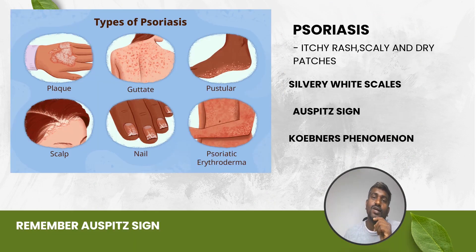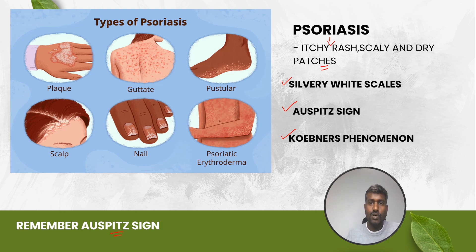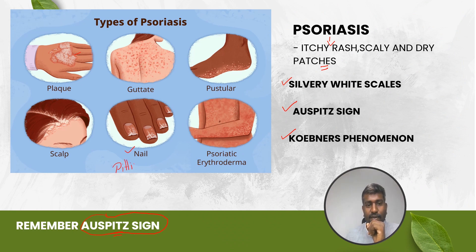Psoriasis presents as itchy, scaly, and dry patches with silvery-white scales. Remember Auspitz sign — when you scratch the scaly dry flakes there is pinpoint bleeding. Also remember Koebner's phenomenon. In nail psoriasis you will see pitting and oil drop sign — both very important to remember.